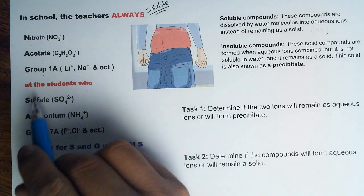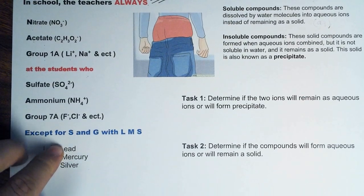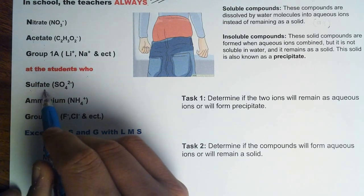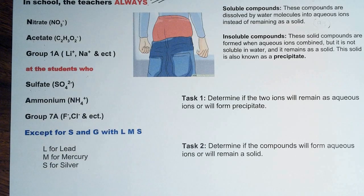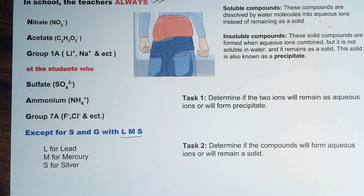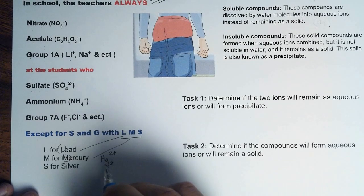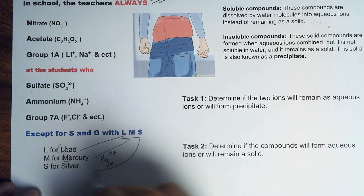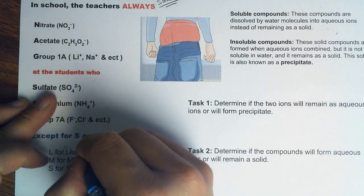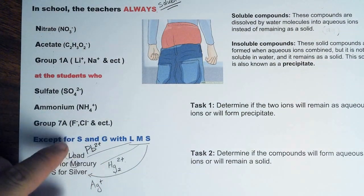Now let's look at 'at the students who sag.' S is for sulfate — so any compound with sulfate will always be soluble, except with the condition of LMS. L is for lead (Pb2+), M is for mercury (Hg2 2+), and S is for silver (Ag+). That's LMS, and LMS only applies to the S and G in sag. Then A in sag is for ammonium — any compound with ammonium will always be soluble. And the second G is for Group 7A, the halogens.